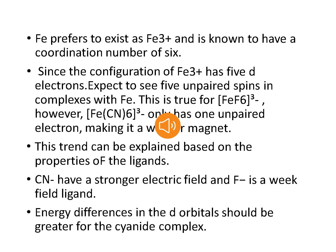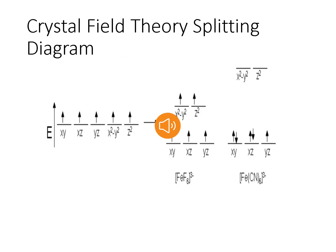Here is the CFT splitting diagram of iron, where you can see iron with no ligand, iron with fluoride ligand, and iron with cyanide ligand. In hexafluoroferrate, the weak field of the fluoride ligand produces only a small crystal field splitting, because it requires less energy for the electrons to occupy the Eg orbitals than to pair together. For the 5 d electrons on the ferric center in hexafluoroferrate, there will be no pairing of electrons and five unpaired electrons are present.